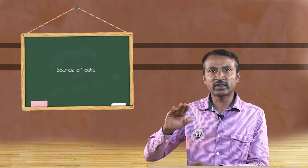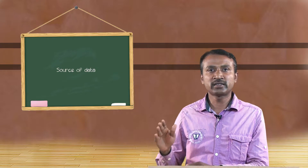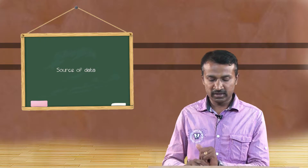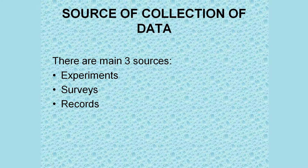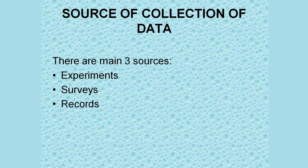Analysis is mainly done for statistical purposes. There are different methods of collection of data. There are three main important sources of collecting data: one is experiments, survey, and records.